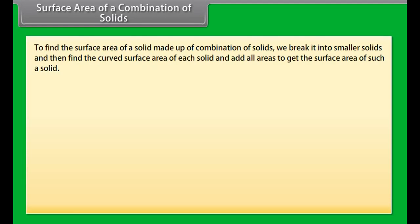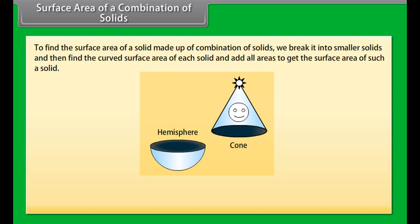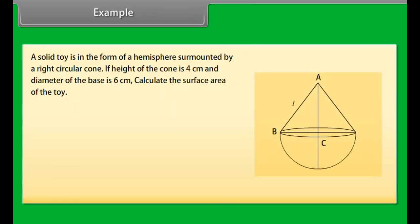Surface area of a combination of solids: to find the surface area of a solid made up of a combination of solids, we break it into smaller solids and then find the curved surface area of each solid and add all areas to get the total surface area. For example, look at this toy — it is a combination of a cone and a hemisphere. The total surface area of the toy equals the curved surface area of the hemisphere plus the curved surface area of the cone.